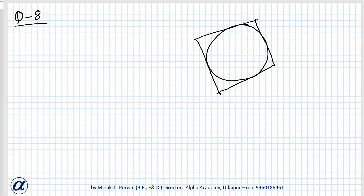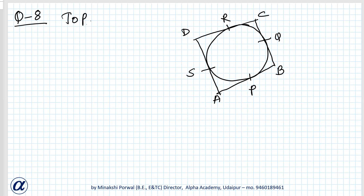Naming the points: D, C, A, B on the quadrilateral and R, Q, P, S as the points of tangency on the circle. We have to prove that AB + CD = AD + BC.